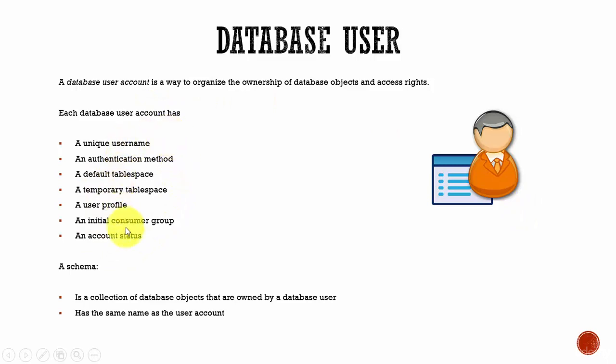A schema is nothing but the collection of database objects owned by the database user. In our example, if the database user is inventory, a schema called inventory will be created, and all database objects like tables, views, sequences, stored procedures, indexes, and synonyms are stored within this schema. The schema has the same name as the user account.